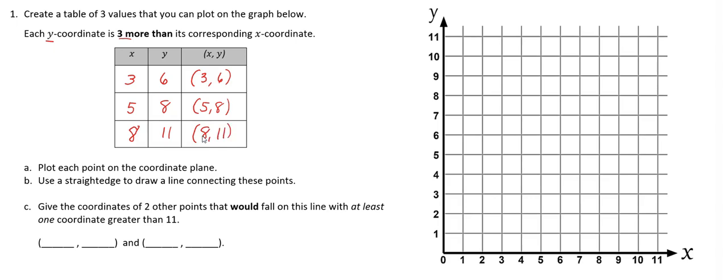Next, it tells us to plot each point on the coordinate plane. So we'll plot three, six — going over three and up six. Then I'll plot five, eight — over five, up eight. And I'll plot eight, eleven — over eight and all the way up to the top for eleven.